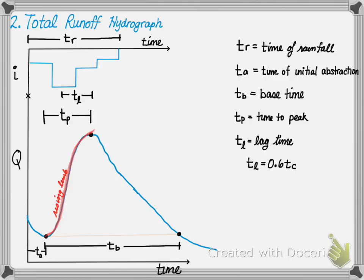Highlighted in red refers to the rising limb. It is the increase in discharge as water moves through the watershed and responds to the rain event. The falling limb or recession represents the end of the storm and the flow or water moving out of storage. The inflection point is the point located on the hydrograph where we start getting groundwater interactions back into the stream.